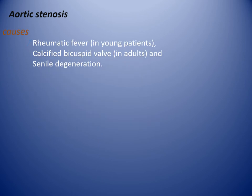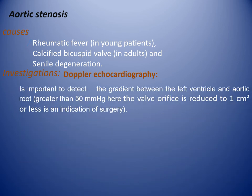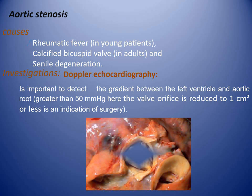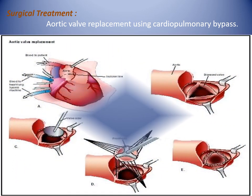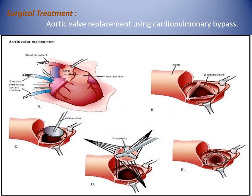Aortic stenosis causes: rheumatic fever, calcified bicuspid valve in adults, and senile degeneration. Echocardiography is important to detect the gradient between the left ventricle and aortic root — greater than 50 mmHg — where the valve orifice is reduced to 1 cm² or less, which is an indication for surgery. Surgical treatment: aortic valve replacement using cardiopulmonary bypass.